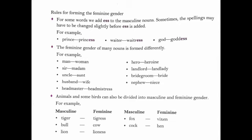Animals and some birds can also be divided into masculine and feminine gender. For example: tiger is a masculine noun and tigress — here we also use -ess — is a feminine noun. Bull and cow, lion and lioness, fox and vixen, cock and hen. These are all masculine and feminine gender pairs.